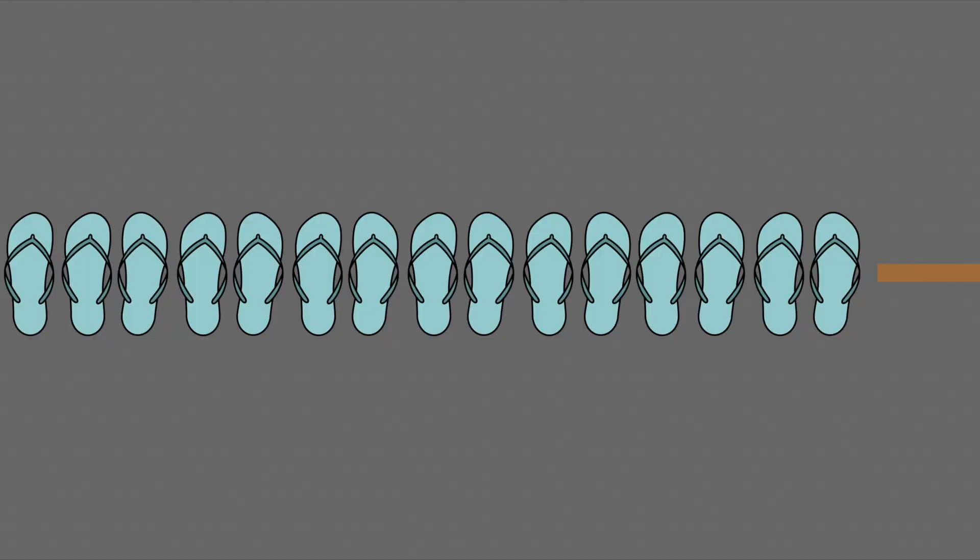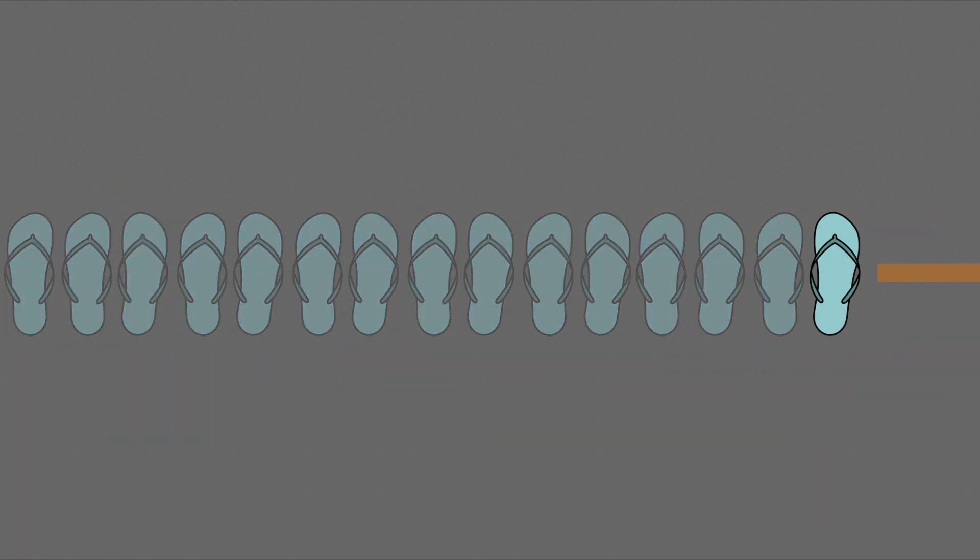Now this chain of 15 flip-flops is inside every quartz clock. Now needless to say they don't look exactly like this, but the mechanism is still the same. Now let's look at just the first flip-flop in isolation. Now when we get a pulse of electricity coming from the quartz tuning fork, the flip-flop will flip. It turns from the off position to the on position. And for every new pulse of electricity that comes, it turns the flip-flop either off or on.